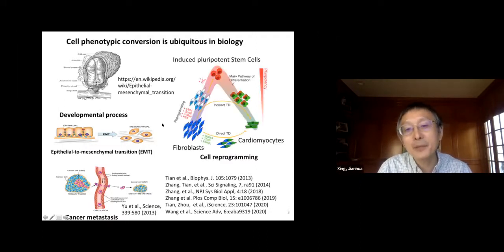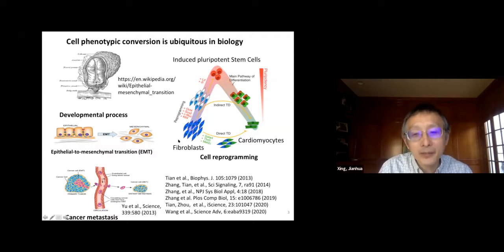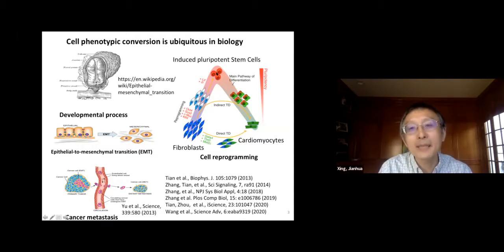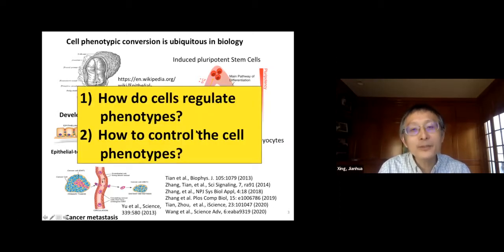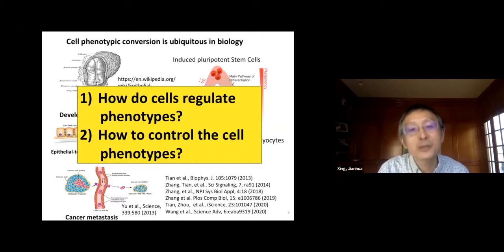Another example is cell reprogramming. We can reprogram terminally differentiated cells like fibroblasts into induced pluripotent stem cells, then differentiate into other cell types, or directly transdifferentiate one cell type to another. So all this leads to the question: how do cells regulate phenotypes, and how can we control cell phenotypes?